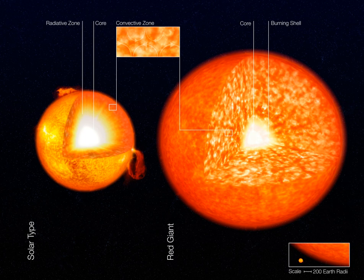In red giant stars, and particularly during the asymptotic giant branch phase, the surface convection zone varies in depth during the phases of shell burning. This causes dredge-up events — short-lived, very deep convection zones that transport fusion products to the surface of the star.